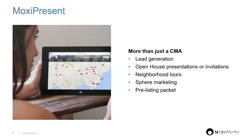One of my favorite examples: a Seattle-based real estate agent created a presentation all about microbreweries in one specific neighborhood. It ended up having the most social media interaction he's ever had. He included his marketing materials, so it wasn't listing-related, but he still ended up with referrals from that presentation — a great boon to his business.